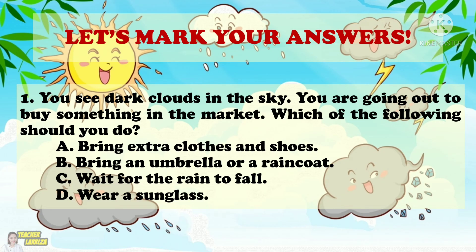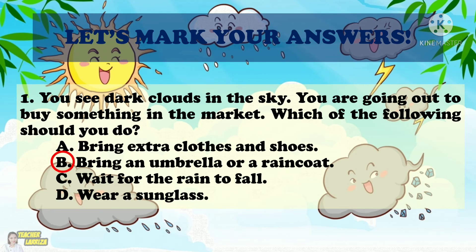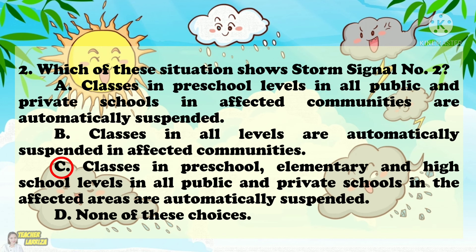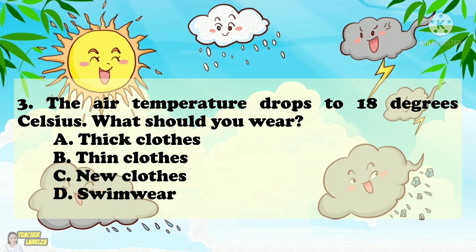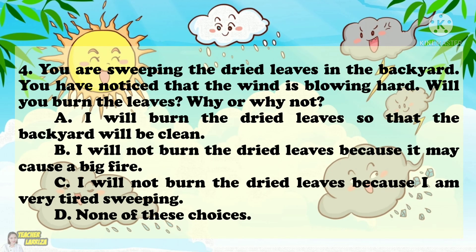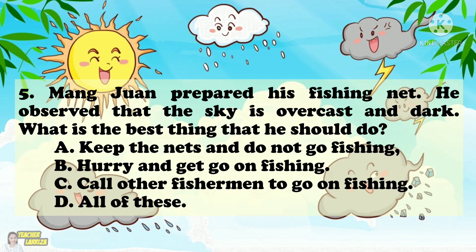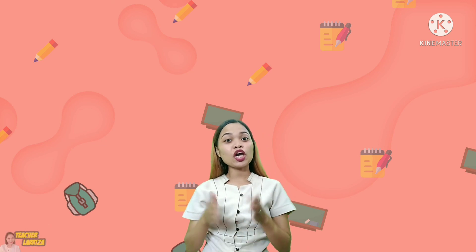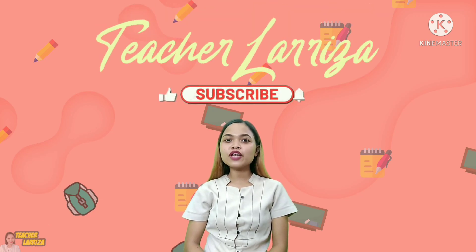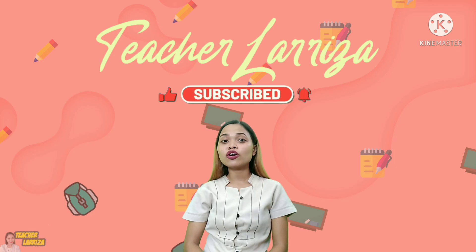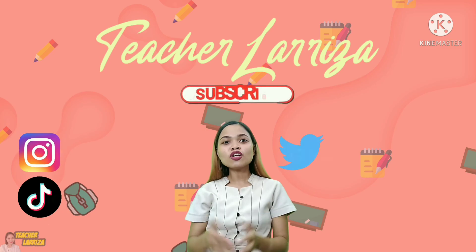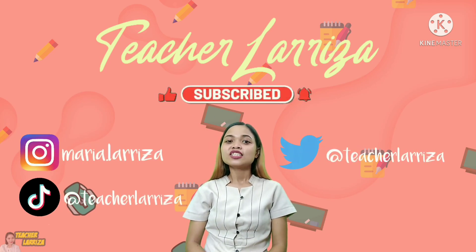For our quiz: Number 1 — the correct answer is Letter B: Bring an umbrella or a raincoat. Number 2 — the correct answer is Letter C. Number 3 — the correct answer is Letter A: Thick clothes. Number 4 — the correct answer is Letter B: I will not burn the dried leaves because it may cause a big fire. Number 5 — the correct answer is Letter A: Keep the nets and do not go fishing. Did you get all the answers correct? Excellent! I hope you learned something new in our science episode today. Don't forget to hit like, subscribe to our channel, and ring the notification bell to stay updated on our next videos. See you again next week!